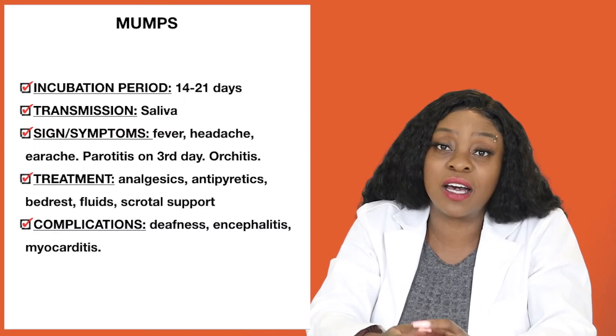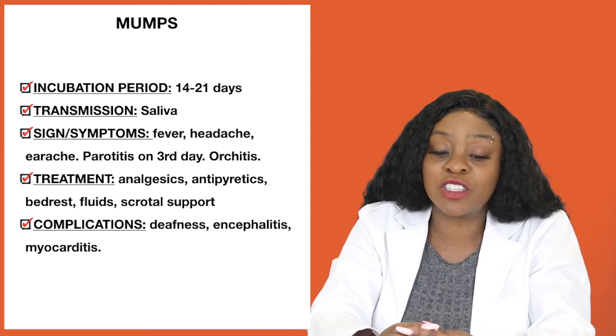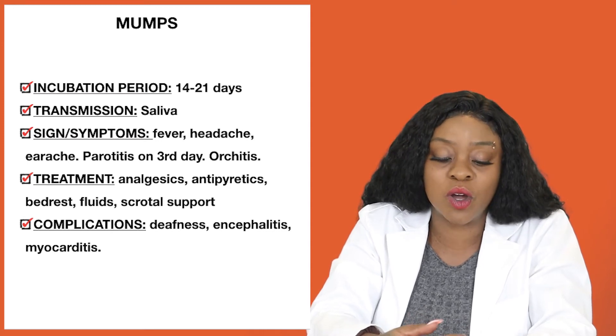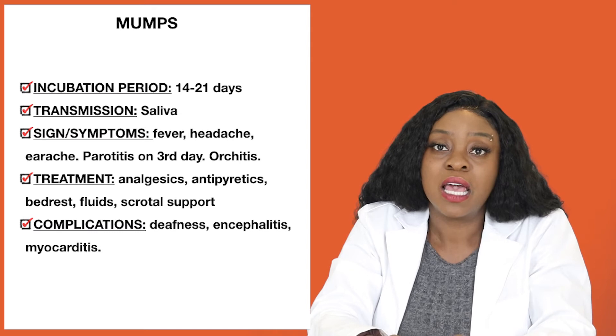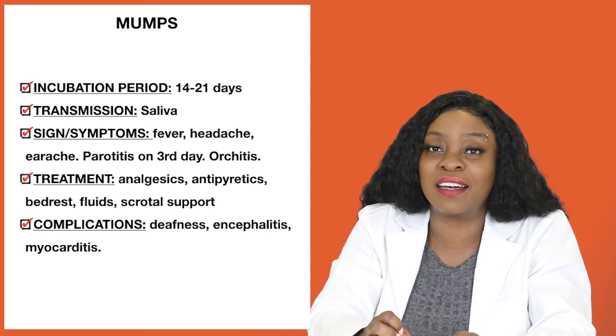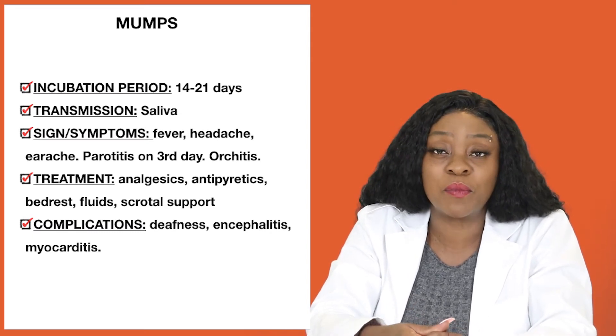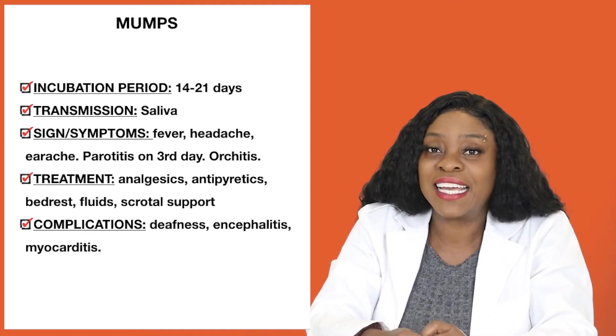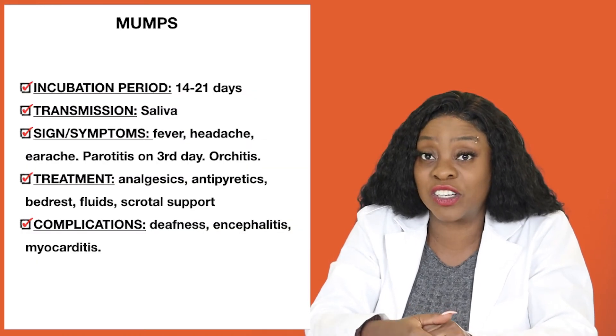Another common pediatric communicable disease is parotitis, or mumps. Mumps is inflammation of the salivary glands, and it transmits via droplet transmission, so we use droplet precautions for mumps. Mumps has an incubation period of 14 to 21 days, and it is spread from the saliva when they cough or if you come within direct contact. Symptoms of mumps include fever, headache, and many children will have pain along the cheeks or pain along the parotid glands, especially by the third day.